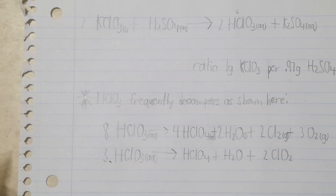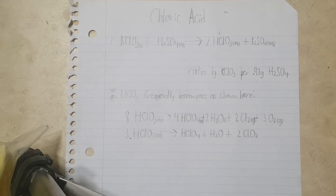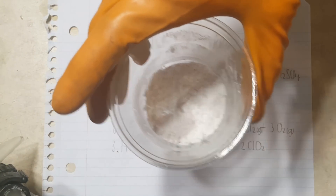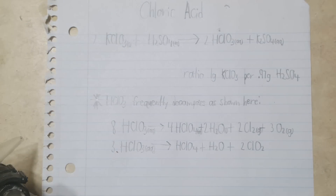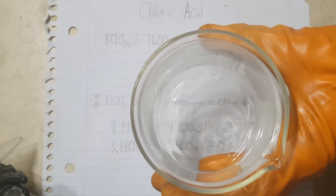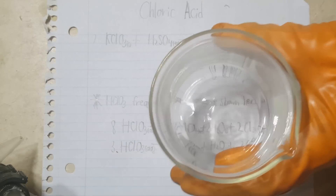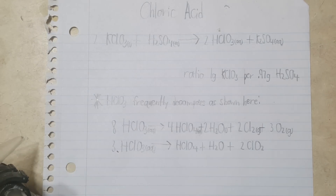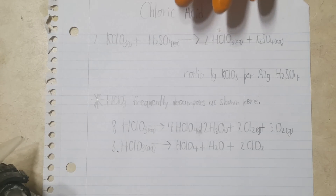So let me show you the chemical equation we're dealing with. What I'm going to be doing is reacting potassium chlorate — this white salt right here — with concentrated sulfuric acid. I have a few milliliters in here. I don't want to make very much of this solution. It's nasty stuff. Potassium chlorate reacts with sulfuric acid to make chloric acid and potassium sulfate.